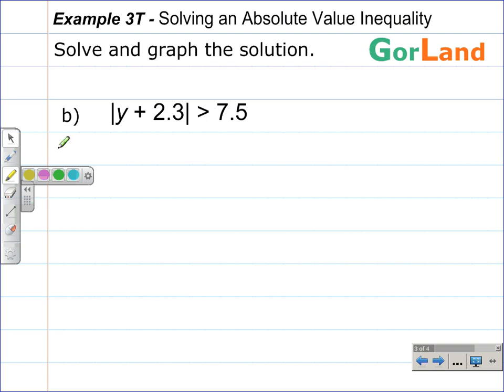Example 3T part b. Solve and graph the solution. Similar setup. The absolute value of y plus 2.3 is greater than 7.5. The difference in this problem is that we're given a greater than symbol, so we will use the OR from Gorland. So when I rewrite this as two separate inequalities, I write down y plus 2.3 is greater than 7.5, or y plus 2.3 is less than negative 7.5.